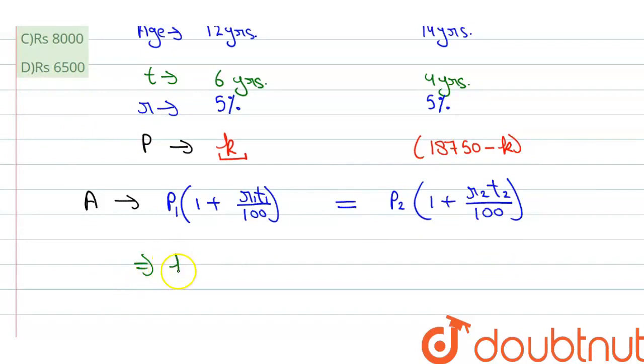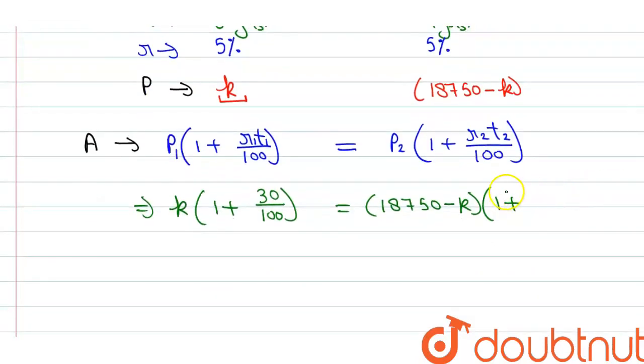So p1 principal we've taken as k times (1 plus r, the rate of interest is 5%, so 5 times 6 equals 30 upon 100) equals p2 principal which is 18,750 minus k times (1 plus r is 5 and t2 time is 4 years, so 5 times 4 equals 20 upon 100).